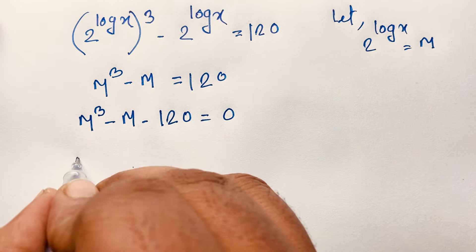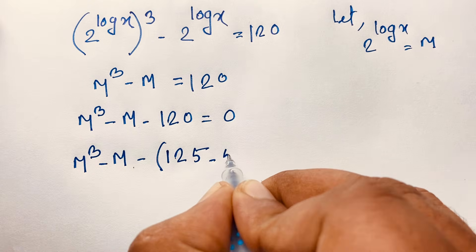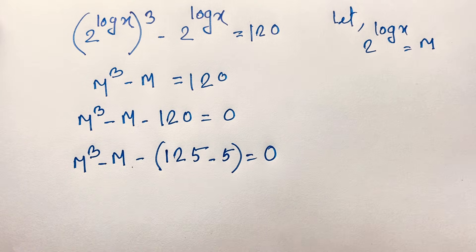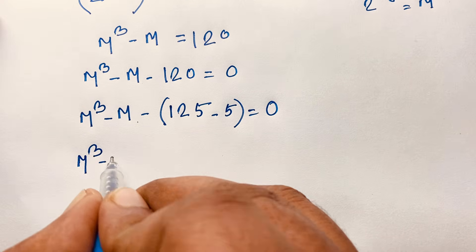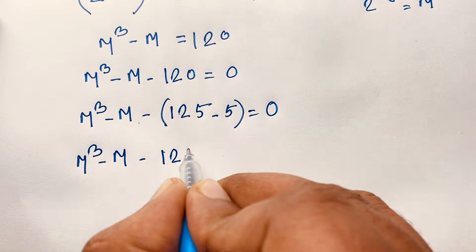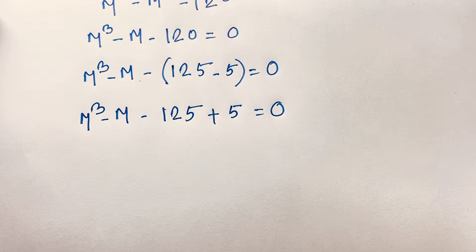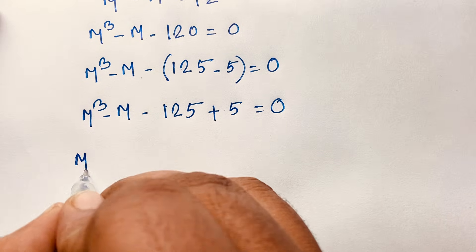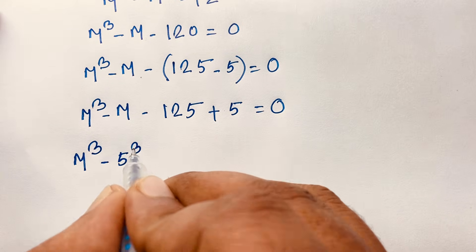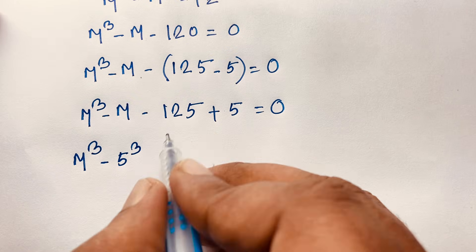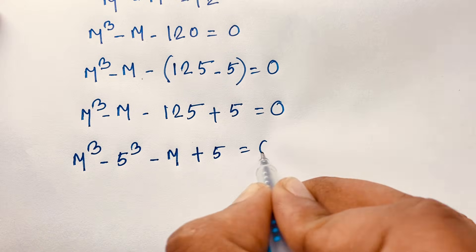We rewrite the expression: m cubed minus m minus 120 equals 0, which we split as m cubed minus 125 minus m plus 5 equals 0. Note that 5 to the power 3 equals 125, so this becomes m cubed minus 125, minus m plus 5, all equal to 0.